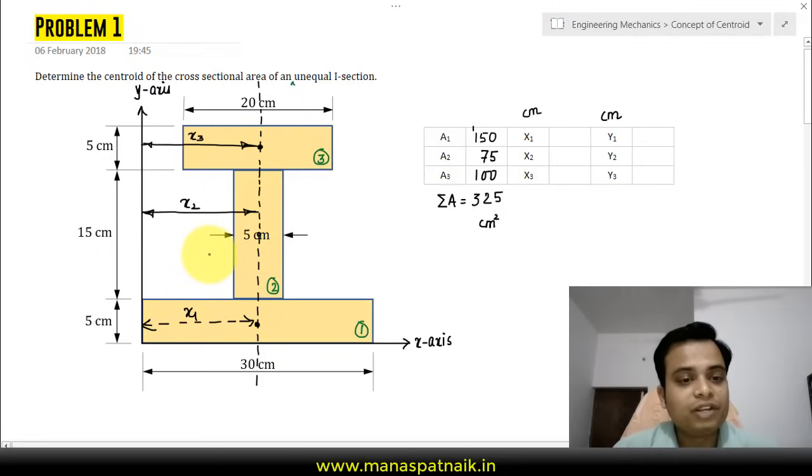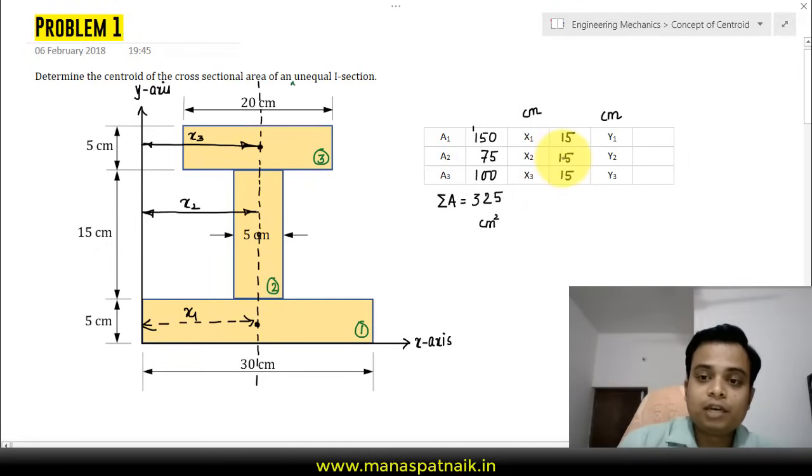All of them are going to be equal to 15. This is 30, so half of 30 is going to be 15. So x1 will be 15, x2 will be 15, and x3 also will be 15. Now we only need to worry about their y coordinates.